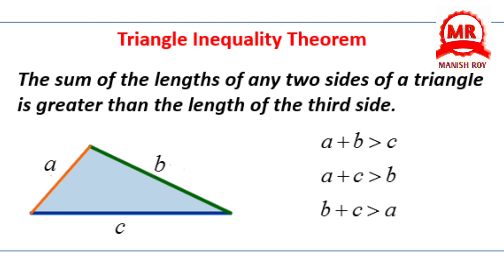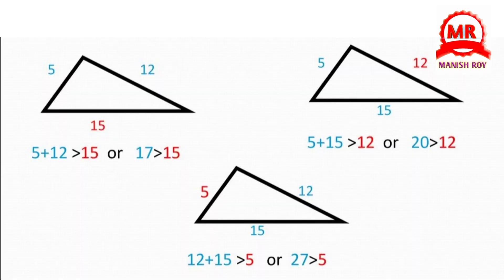Triangle inequality theorem. The sum of the lengths of any two sides of a triangle is greater than the length of the third side. In this figure, A plus B is greater than C, A plus C is greater than B, and B plus C is greater than A. From this example, we can say that in a triangle, if we take the sum of any two sides, it is always greater than the third side.